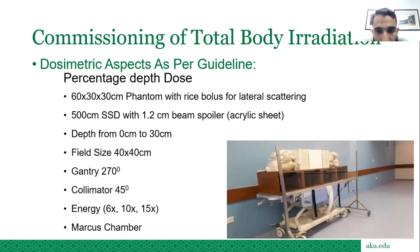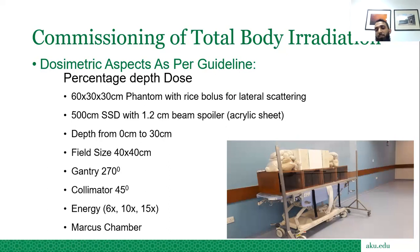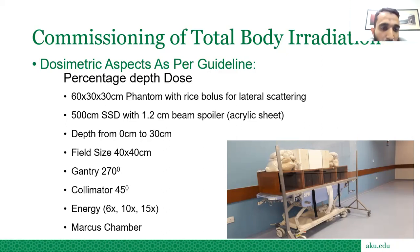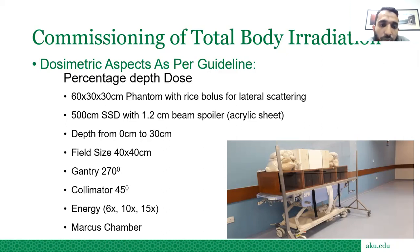For PDD measurement, we used a 60×30×30 cm phantom with rice bolus for lateral scattering — a 30×30×30 cm cubical phantom in the center with 15 cm slabs on each side accumulating to 15 cm, totaling 60 cm in length, 30 cm height, and 30 cm depth. The setup was placed at 500 cm SSD with a 1.2 cm beam spoiler as a beam degrader. Data was measured from 0 to 30 cm. Field size was 40×40, gantry at 270°, and collimator at 45°.